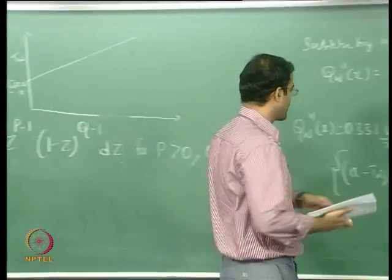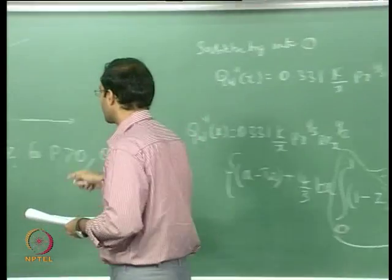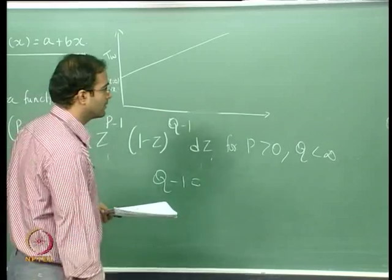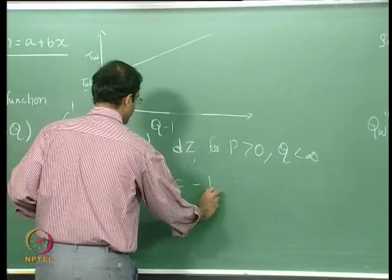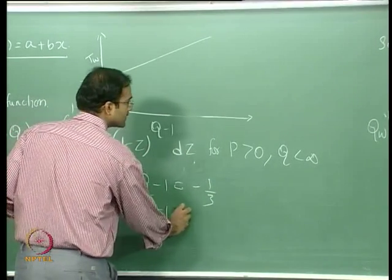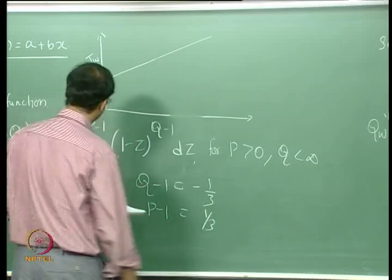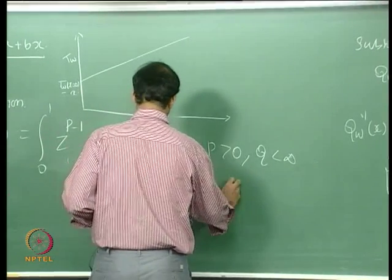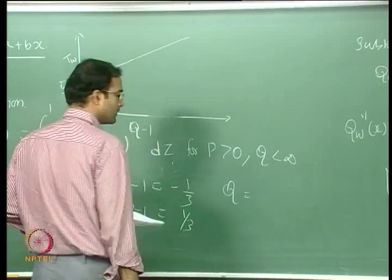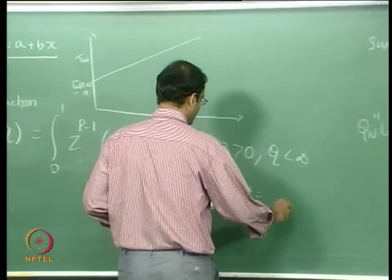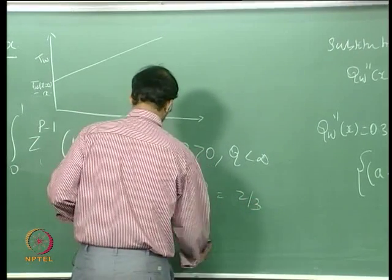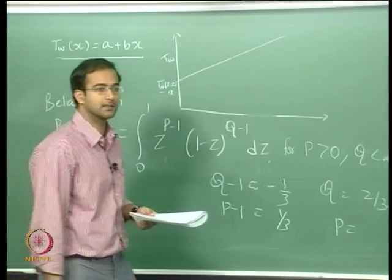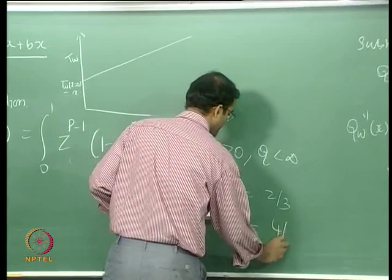Comparing with our integral, (1−z)^(−1/3) gives q−1 = −1/3, so q = 2/3. And z^(1/3) gives p−1 = 1/3, so p = 4/3. Therefore the integral is Beta(4/3, 2/3).